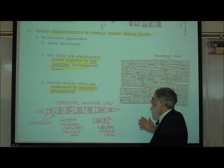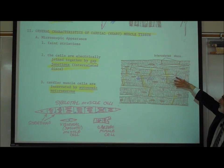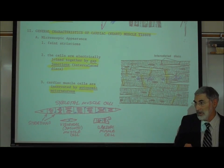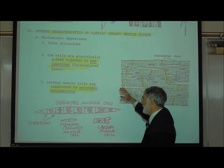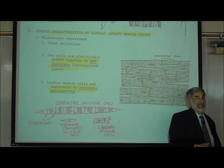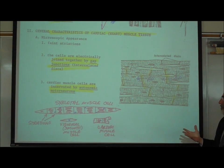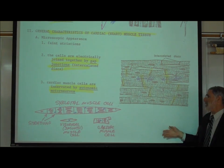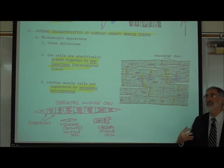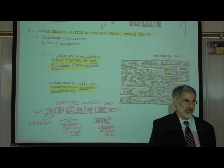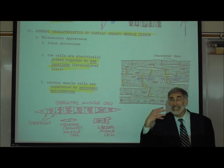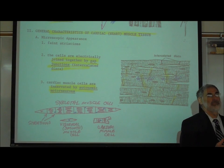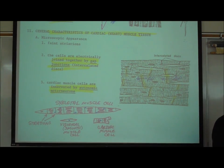Cardiac muscle does exhibit striations — in that respect it's like skeletal muscle — but the striations are not as prominent; they are lighter in appearance. That's why skeletal muscle is called striated muscle, because of the prominence of the striations. Cardiac muscle, like visceral smooth muscle, is innervated by autonomic motor neurons. We do not have any voluntary control over our heart at all, but our brain is controlling our heart rate subconsciously and involuntarily via the autonomic motor neurons.